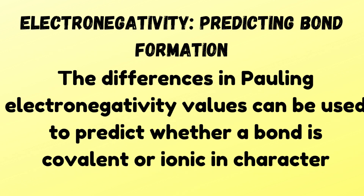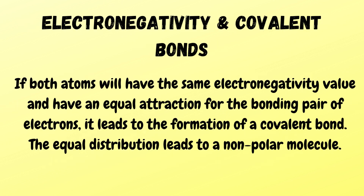How do we predict bond formation? The differences in Pauling electronegativity values can be used to predict whether a bond is covalent or ionic in character. Let's look at electronegativity and covalent bonds.